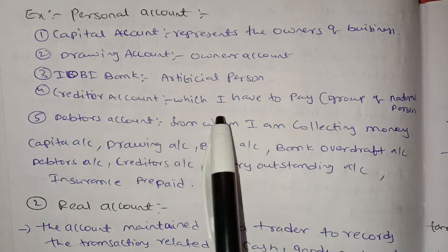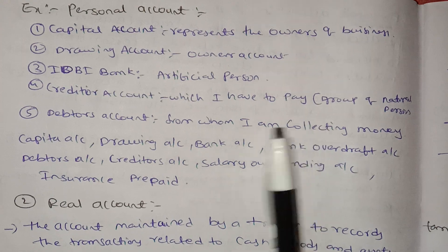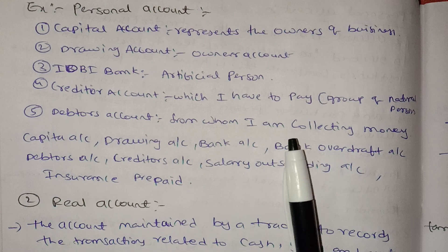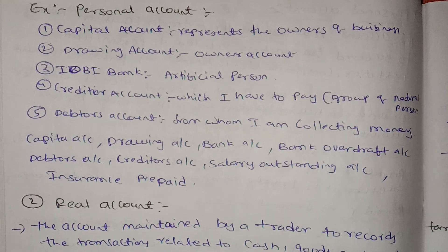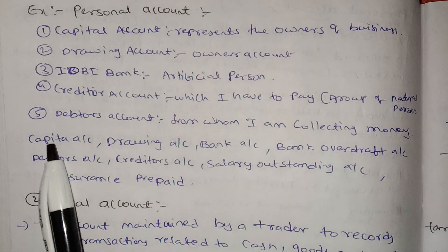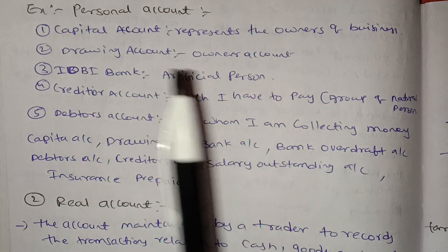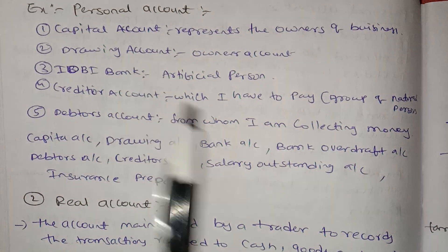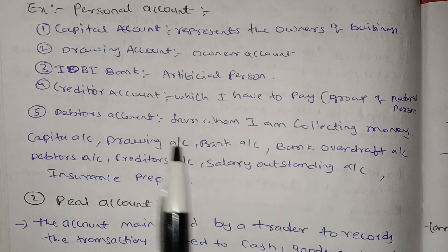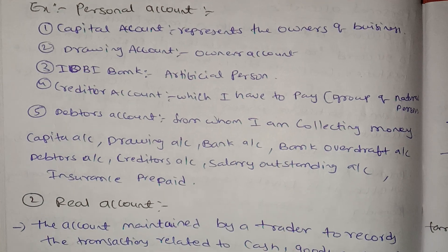Credit account is what I have to pay. Debit account is from whom I am collecting money. Examples of personal accounts include: capital account, drawing account, bank account, bank overdraft, salary outstanding account, and insurance prepaid account. These are all personal accounts.